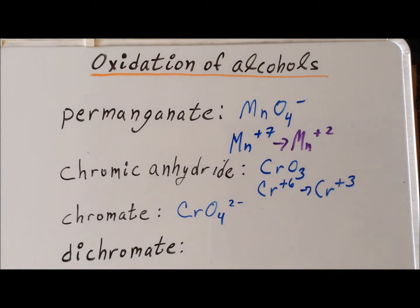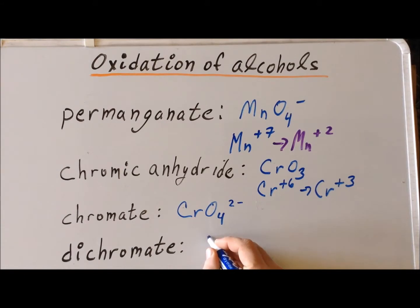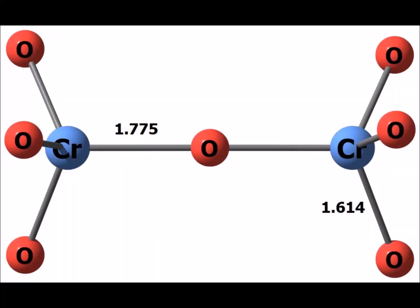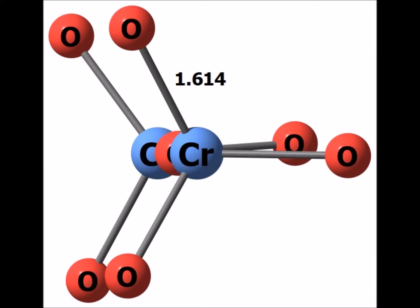Still a third way to introduce chromium plus 6 as our oxidizing agent involves the use of dichromate ion. Dichromate ion has the formula Cr2O7 with a minus 2 charge. Dichromate ion has the structure as shown in the following diagram.